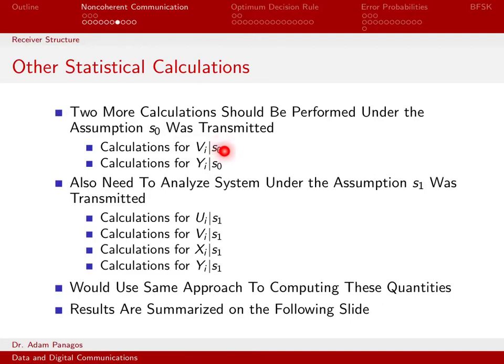We still need to analyze vi under the assumption that S0 was transmitted. We also need to understand how yi is distributed under the assumption that S0 was transmitted. After we mix and integrate, we have a random component come through due to the noise coming into the system, and that component is what we've been calling xi.